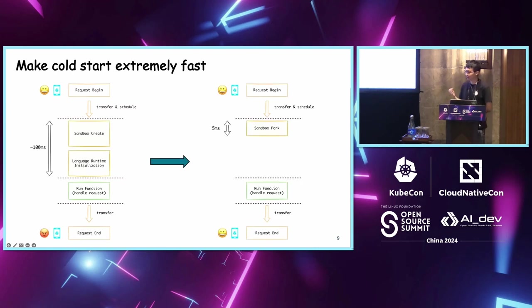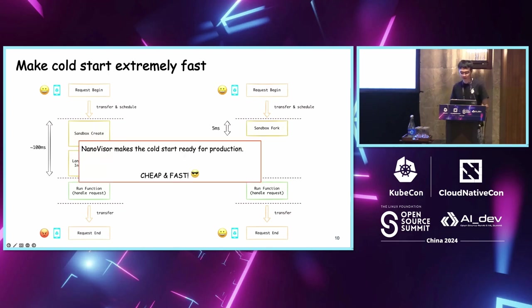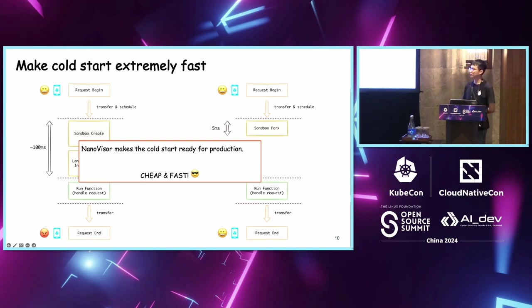So is there any way to optimize the cold start and also achieve the same performance as warm start? We chose to fork a sandbox and achieve about 5 milliseconds cold start performance. NanoVisor makes it possible, and this cold start performance is ready for production and good user experience. It's cheap because we do not cost as much memory as warm start, and it's fast.